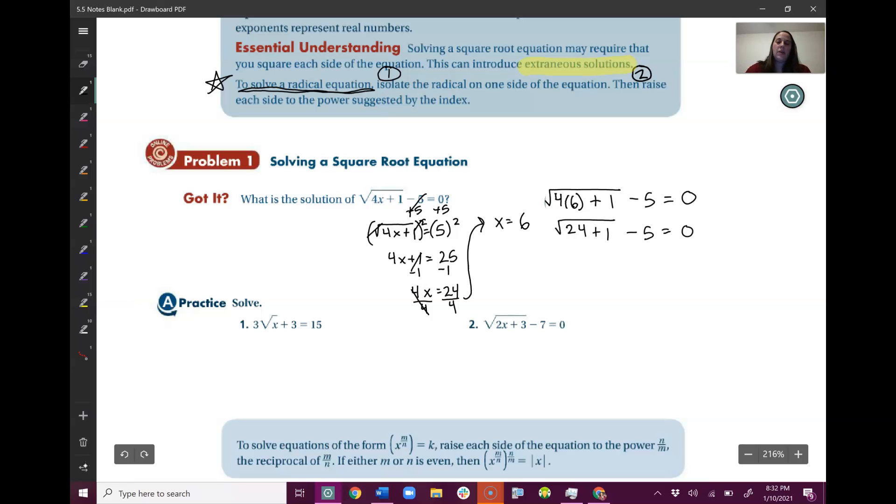Plus 1 minus 5 should equal 0. So 4 times 6 is 24 plus 1 minus 5, hopefully equals 0. 24 plus 1 is 25 minus 5, hopefully equals 0. Square root of 25 is 5 minus 5, hopefully equals 0. And 5 minus 5 does indeed equal 0.